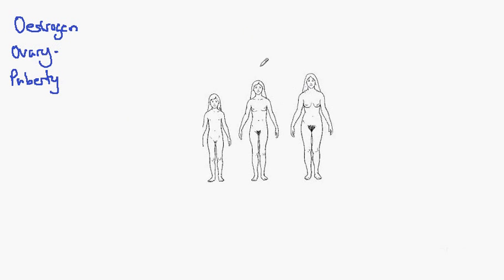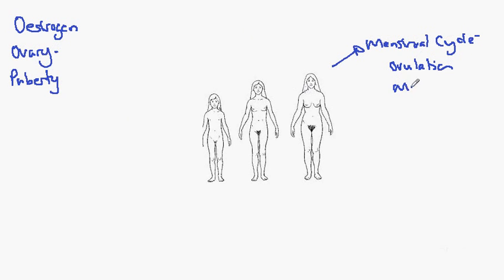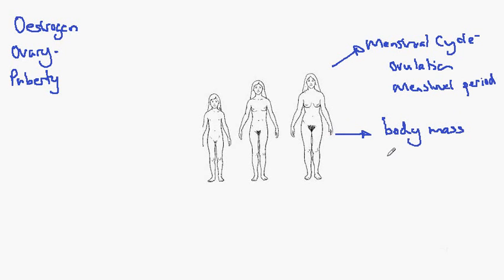These include the beginning of the menstrual cycle, which would include ovulation — the release of eggs — and the menstrual period. As in males, we would expect to see the development of body mass, and accompanying this, a rounding of the body shape at the hips.